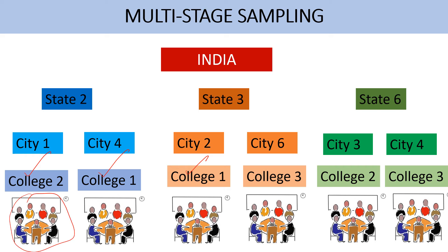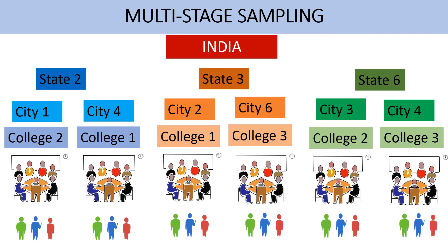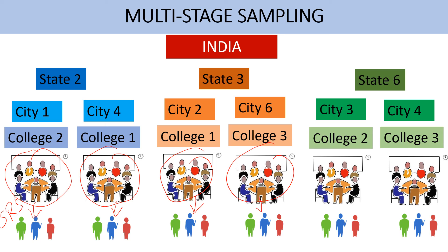These are all the teacher educators from College 2, all the teacher educators from this college, all the teacher educators from this college. So I can collect my data from here, and this will be my final sample. But if it is not feasible to collect data from these many teacher educators, then I need to go further. I will select few teacher educators among one college by using simple random sampling, and the same pattern for another college. This way I will select my final sample.